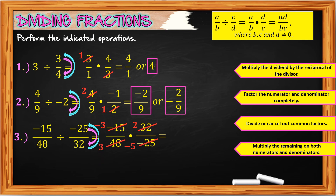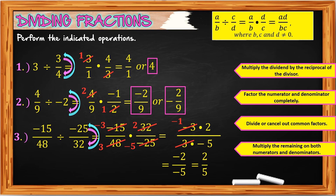Then multiply the remaining on both numerators and denominators. We have negative 3 times 2 on the numerator and 3 times negative 5 on the denominator. We still have a common factor of 3: negative 3 divided by 3 is negative 1. Multiply the remaining: negative 1 times 2 gives negative 2 over negative 5. Negative 2 divided by negative 5 is equal to positive 2 over 5, and that is the final answer.